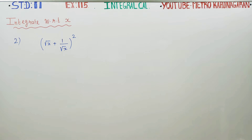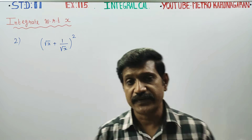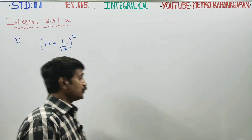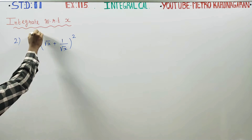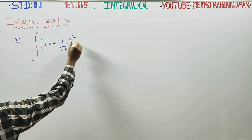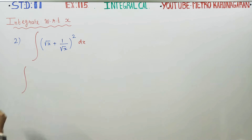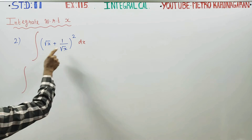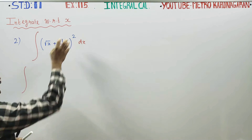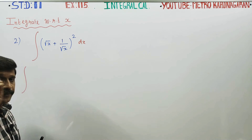Dear 11th standard students, in exercise number 11.5, sum number 2, you have to integrate this function with respect to X. I am going to put just an integration symbol with respect to X, for integration of (a + b)², I am going to integrate this function with respect to X.